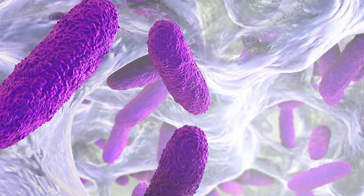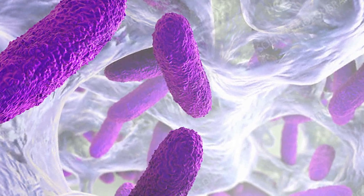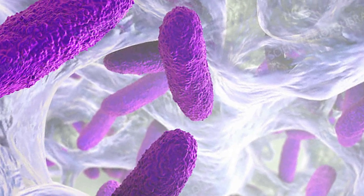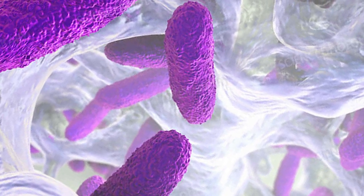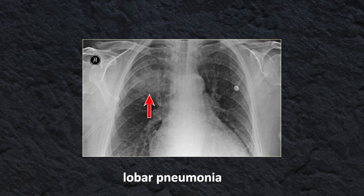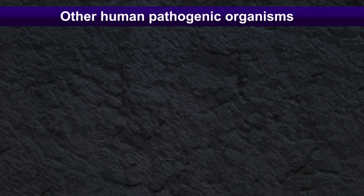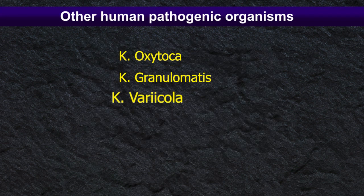Klebsiella pneumoniae is the most common organism of the genus which can cause lobar pneumonia. Also, Klebsiella oxytoca, Klebsiella granulomatis, and Klebsiella variicola are known as other human pathogenic organisms.